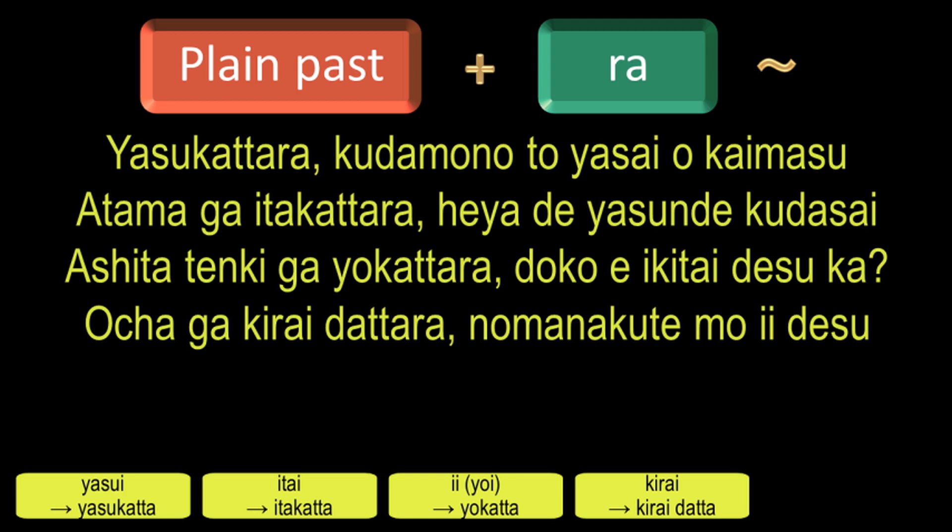Hima is a Na-adjective and it means free. Its plain past form is Hima Datta. By adding Ra, we will get the condition Hima Dattara, which means if someone is free.